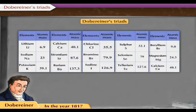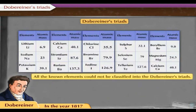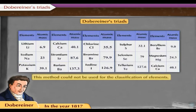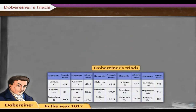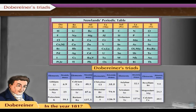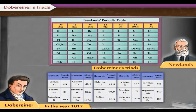Thus, all the known elements could not be classified into Dobereiner's triads. Therefore, this method could not be used for the classification of elements. After the failure of Dobereiner's triads, Newlands tried to classify elements. Let us acquaint ourselves with this system of classification.